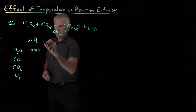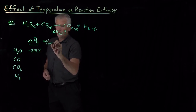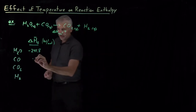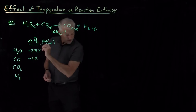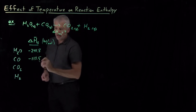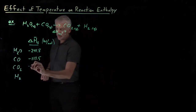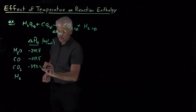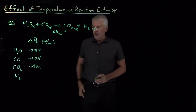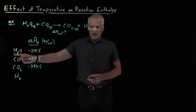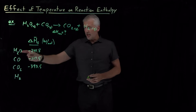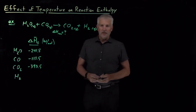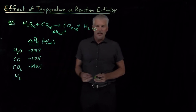Water has an enthalpy of formation of negative 241.8 kilojoules per mole. Carbon monoxide is also negative: negative 110.5 kilojoules per mole. CO₂ is even more stable at negative 393.5 kilojoules per mole. Those numbers are all negative, indicating that when we form these compounds out of elements in their standard states, the enthalpy decreases — these are more stable than the elements themselves.